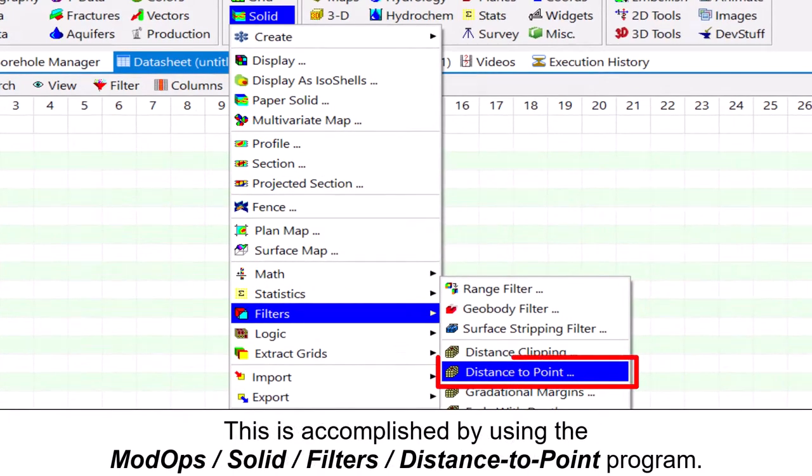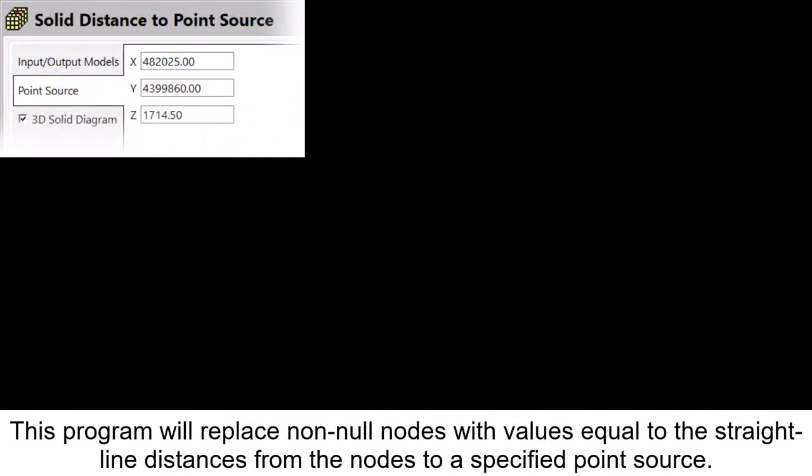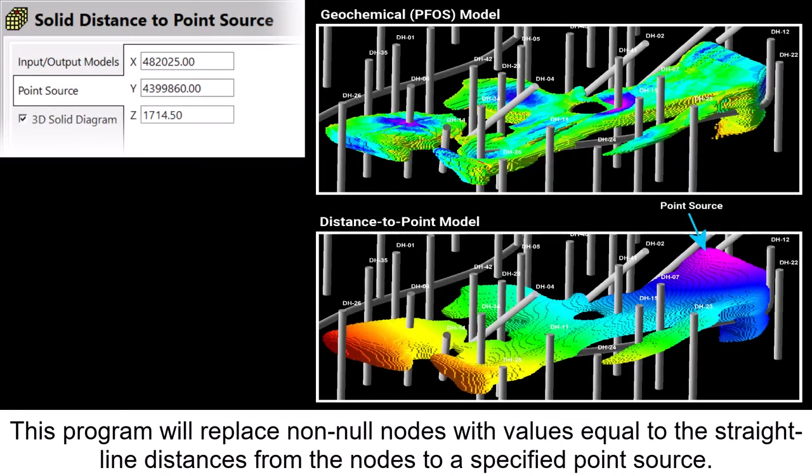This is accomplished by using the ModOps Solid Filters distance-to-point program. This program will replace non-null nodes with values equal to the straight-line distances from the nodes to a specified point source.